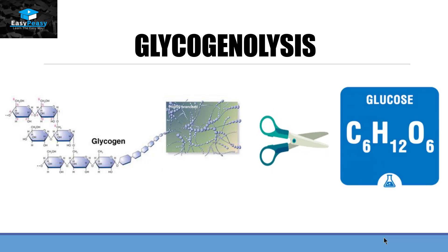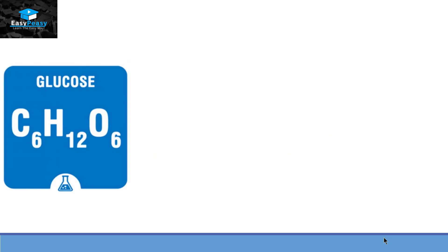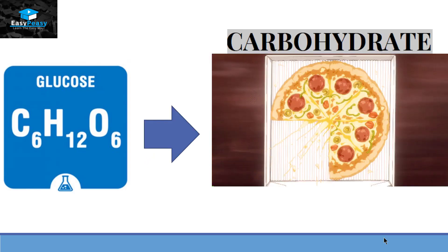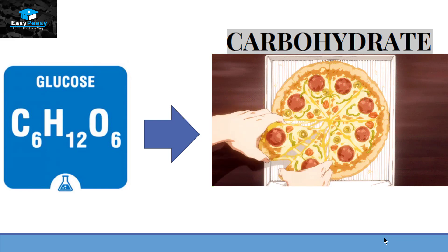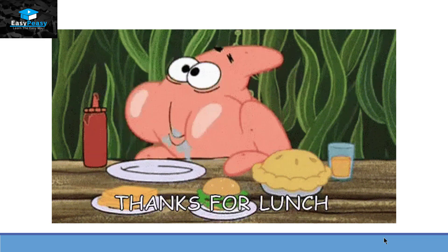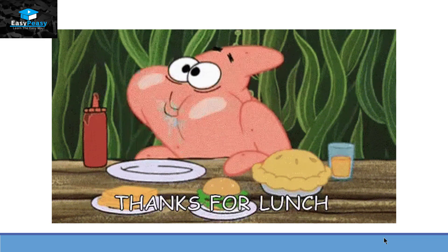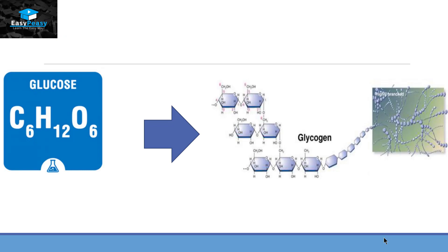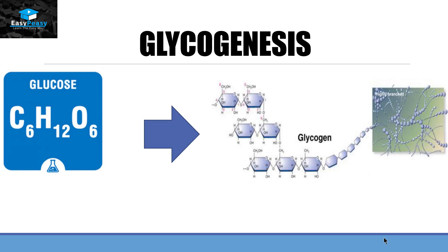Now in normal circumstances, this glucose is usually available to us from the food that we eat, specifically the carbohydrates we eat. But if we take too much carbohydrate into our body, then that excess amount of glucose will convert itself into glycogen. This process is called glycogenesis.